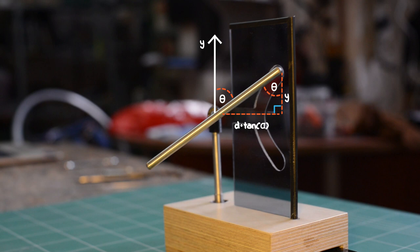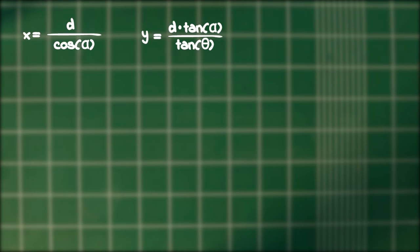Now we get that the leg, which is our y coordinate, is equal to d times the tangent of alpha over the tangent of theta. So we have an expression for x and for y, both in terms of a third parameter, alpha.